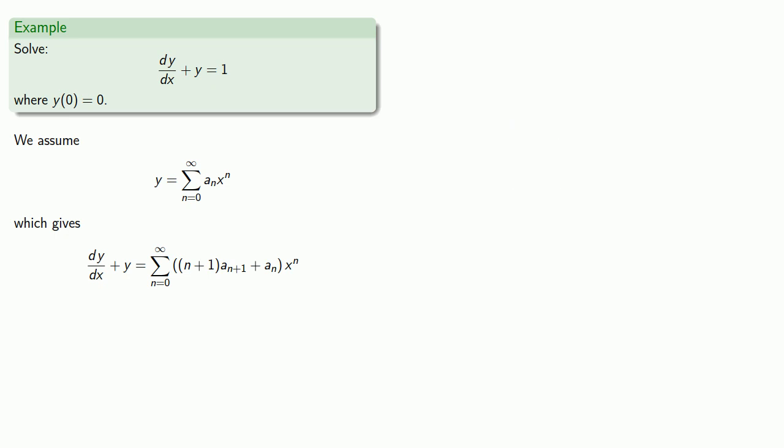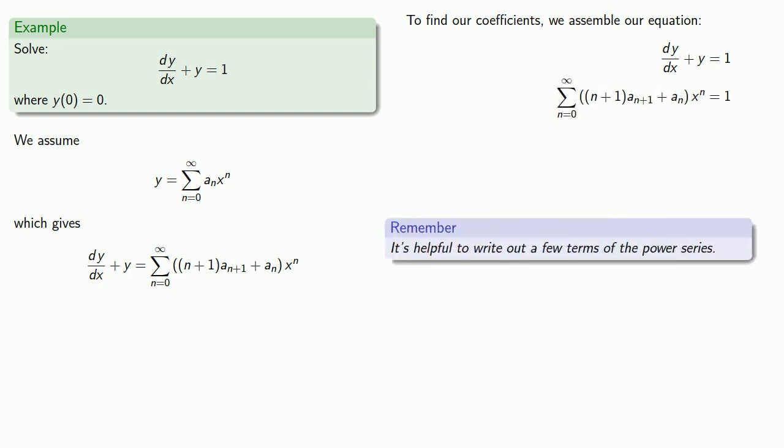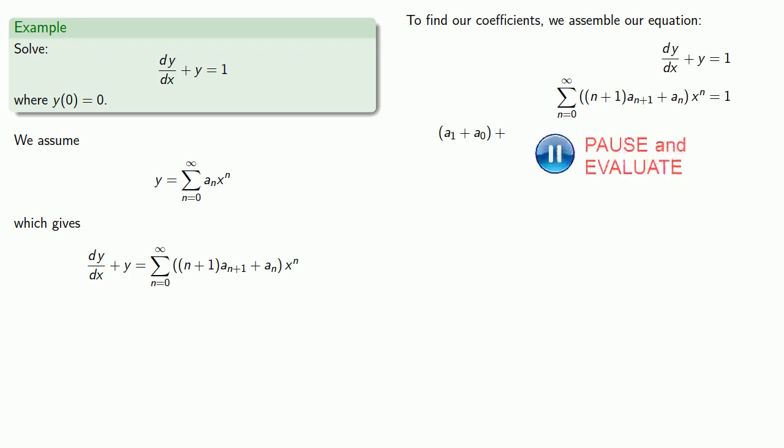And that gives us our differential equation expressed as a power series. To find our coefficients, we'll assemble our equation dy dx plus y equal to 1. So we know our power series for dy dx plus y. And it may be helpful to write out a few terms of our power series. If n equals 0, our corresponding term will be... If n equals 1, we have... n equals 2 gives us... and so on. In order to find these coefficients, we remember that we have to have equality.